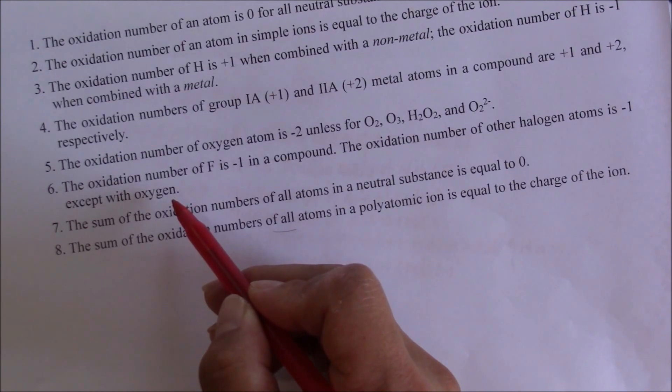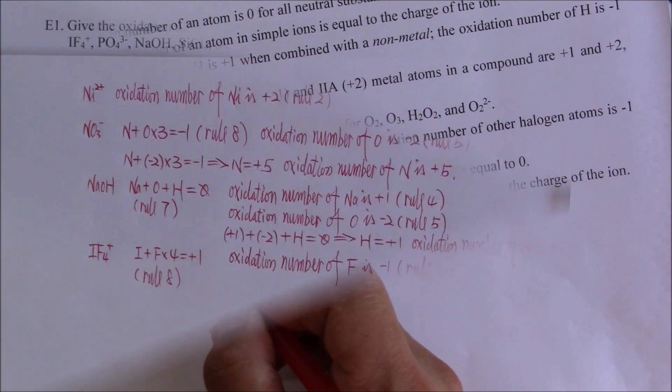If you have a polyatomic ion that contains more than one different kind of halogen atoms such as IF4 plus, the more electronegative will have oxidation number of negative 1. Then we can calculate the oxidation number of the less electronegative.